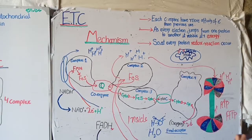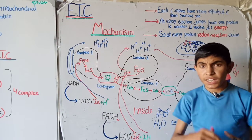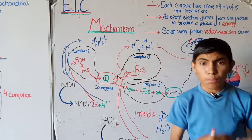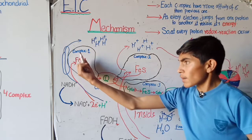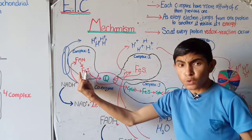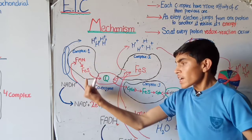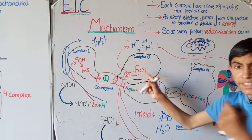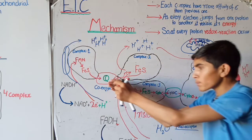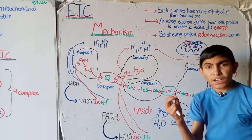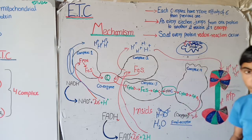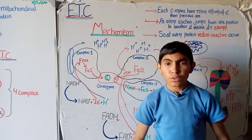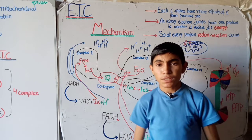At every protein, a redox reaction — reduction and oxidation — occurs, involving the loss or gain of electrons, hydrogen, and oxygen. Each complex is first reduced by gaining electrons from NADH or a coenzyme, then oxidized by passing its electrons onward. This alternating reduction and oxidation process continues throughout the chain and results in the release of a large amount of ATP as energy. I hope this lecture is helpful — please comment any questions, subscribe, and share.